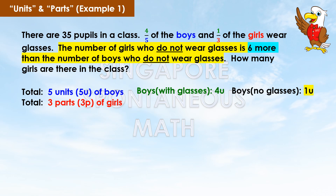Of the five units of boys, four units of them wear glasses. Hence, the number of boys who do not wear glasses is one unit. Five minus four equals one.